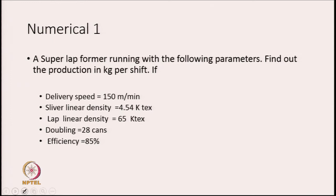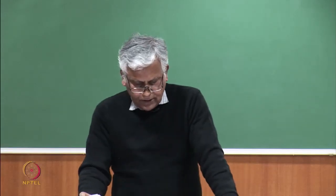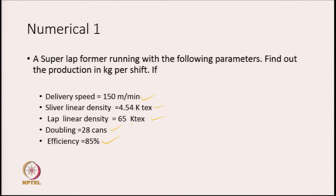Now we will discuss one or two numericals. A super lap former running with the following parameters: find out the production in kg per shift if delivery speed is given, sliver linear density is given, lap linear density is given, doubling is the number of cans being fed which is 28, and efficiency is 85%. If we know production per hour, we can also find out per shift because every shift means 8 hours.